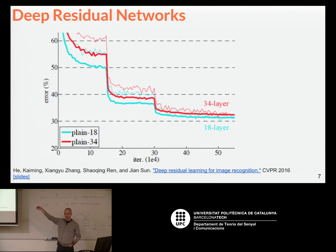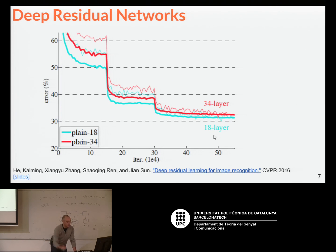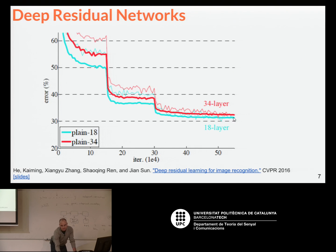Looking at the chart — the blue line is a network with 18 layers. They said, let's add more layers, like 34 layers, in a regular architecture. But the result was not obvious: the red line is over the blue, meaning the error is worse. They realized it was not just a matter of adding layers — they really had to think about something else.